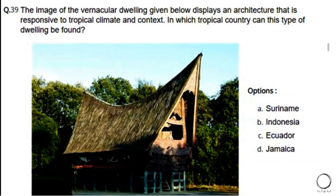Next: The image of the vernacular dwelling displays architecture responsive to a tropical climate. In which tropical country can this type of dwelling be found? Options: a) Suriname, b) Indonesia, c) Ecuador, d) Jamaica. The right answer is option B — Indonesia. These are dwellings found in Indonesia, according to the tropical climate and context of the country.